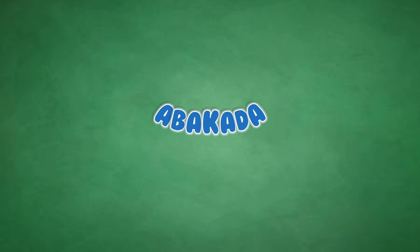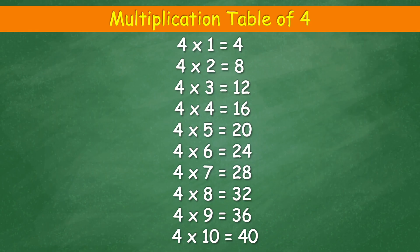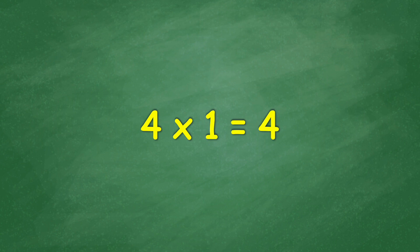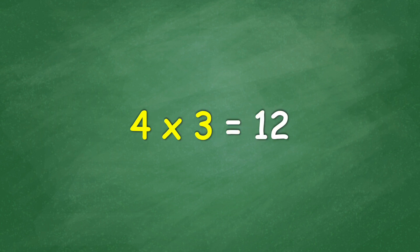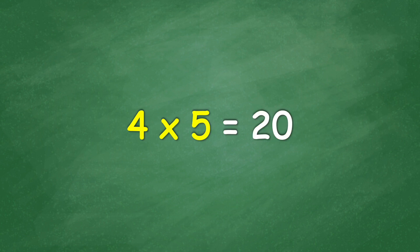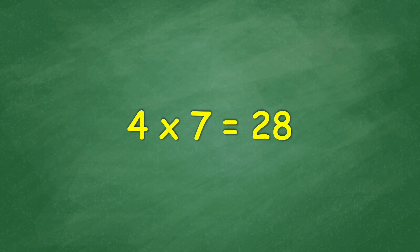Multiplication table of four. Four times one equal four. Four times two equal eight. Four times three equal twelve. Four times four equal sixteen. Four times five equal twenty. Four times six equal twenty-four.